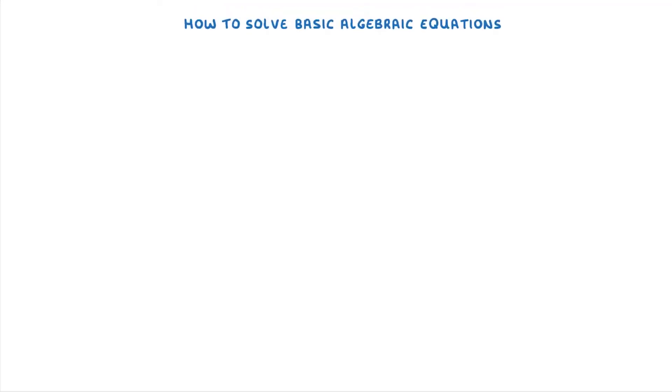In this video we're looking at how to solve questions like these two which normally involve two steps to solve. As we said in our last video, to solve algebraic equations like this, the aim is to get the unknown letter by itself.